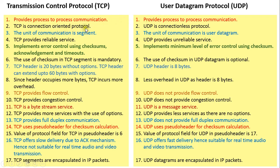TCP is a connection-oriented protocol. Data transfer using TCP takes place in three phases: connection establishment, data transfer, and connection release. A virtual connection is set up between two communicating entities. UDP is a connectionless protocol — no prior connection setup is required. As and when data is available it is transmitted in UDP. In TCP, unless a connection is established, data cannot be sent. The unit of communication for TCP is segment; for UDP it is user datagram.